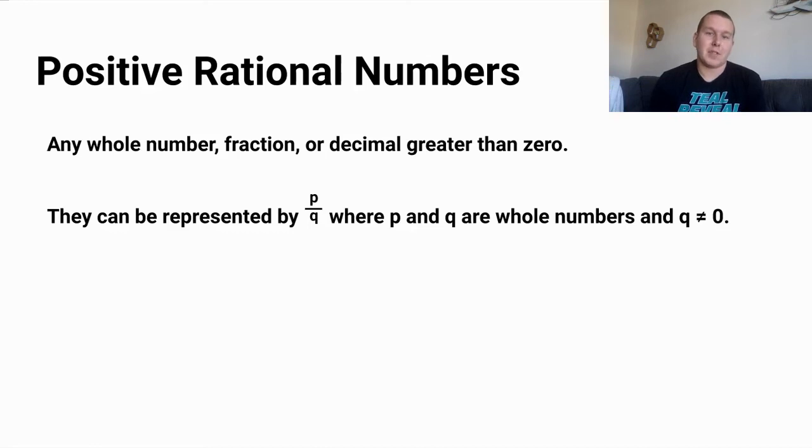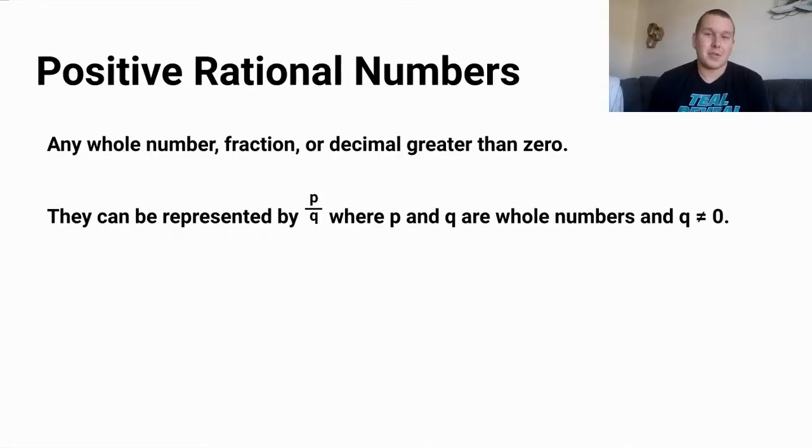The reason why q cannot equal zero is because we cannot really divide things by zero. Have you ever asked Siri, what is something divided by zero? Hey Siri, what's zero divided by zero? Imagine that you have zero cookies, and you split them evenly among zero friends. How many cookies does each person get? See, it doesn't make sense. And Cookie Monster is sad that there are no cookies. And your friends are sad because they don't exist. Oh wow, this escalated quickly. Yeah, Siri totally wrecked me there.